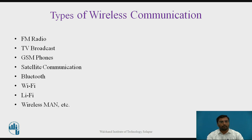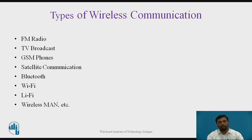The different types of wireless communication are FM radio, TV broadcast, GSM phone, satellite communication, Bluetooth, Wi-Fi, Li-Fi, wireless MAN, etc. These wireless communications have typical frequencies. For example, TV broadcasts have a typical frequency of 200 megahertz, and Wi-Fi and Bluetooth have 2.4 gigahertz. Each of these wireless communications has typical frequencies.